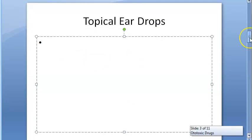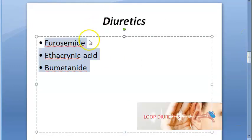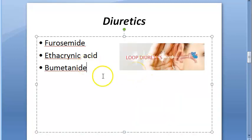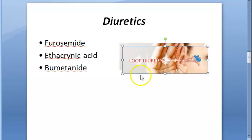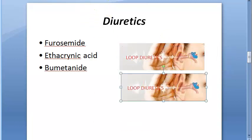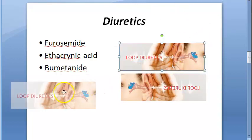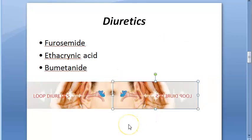Diuretics like furosemide create an imbalance in sodium and chloride ions, causing edema and cystic changes in the stria vascularis of the cochlear duct. In most cases this change can be reversed, but if permanent damage has occurred, nothing can be done. The problem is usually bilateral and symmetrical, and may even be sudden in onset.